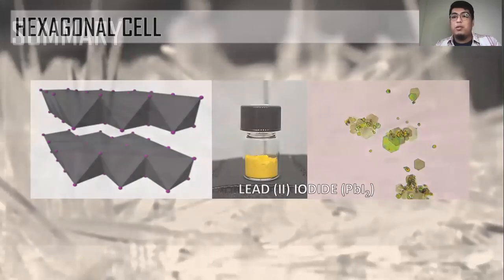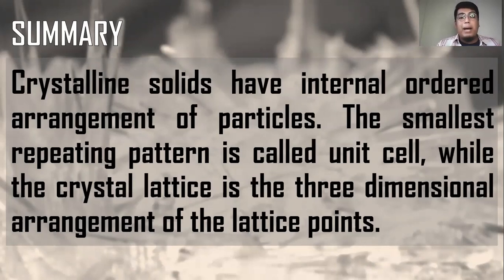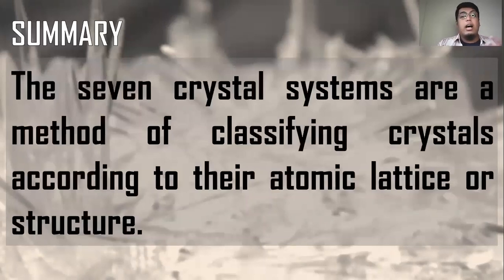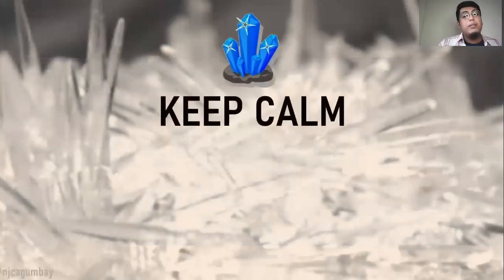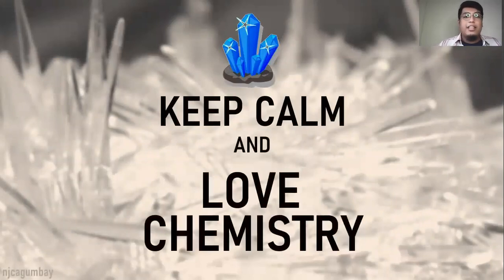As a summary: crystalline solids have an internal ordered arrangement of particles. The smallest repeating pattern is called the unit cell, while the crystal lattice is the three-dimensional arrangement of lattice points. The seven crystal systems are a method of classifying crystals according to their atomic lattice or structure. Keep calm and love chemistry — see you in the next video.